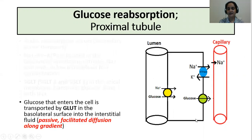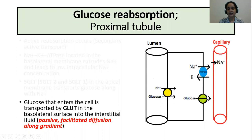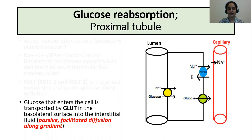Once glucose has entered the cell, it exits the cell by facilitated diffusion passively along the gradient — that is, it moves from high concentration to low concentration into the interstitium. The transporter involved is GLUT, or glucose transporter, which is present on the basolateral membrane. Two types of GLUT have been identified in the proximal tubule: GLUT2 and GLUT1.